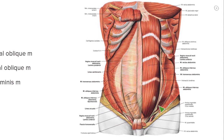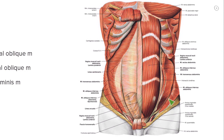This slide will demonstrate the other two muscle layers. Here is the cut edge of the external abdominal oblique along the ribcage. We also have the cut edge and reflection of the internal abdominal oblique, which would lie deep to your external.